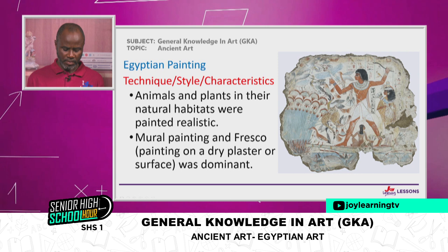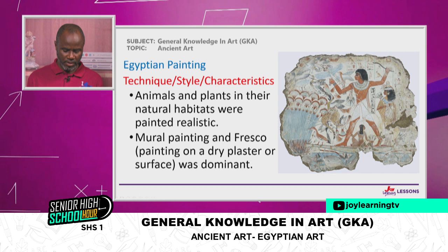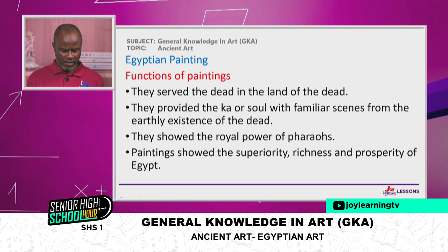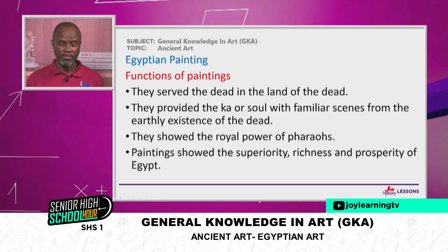Animals and plants in their natural habitats were painted in a realistic form. Mural paintings and fresco — fresco means painting on a dry plaster surface — were dominant. Most of the paintings done by Egyptians were more or less fresco. Now, what are the functions of these paintings? The paintings were mainly to serve the dead in the land of the dead. Painting was not just for fun — it was for that purpose.